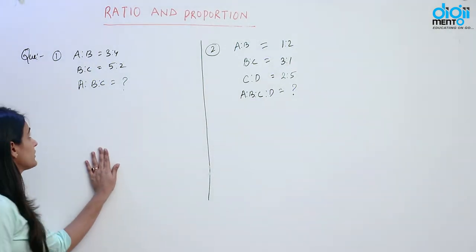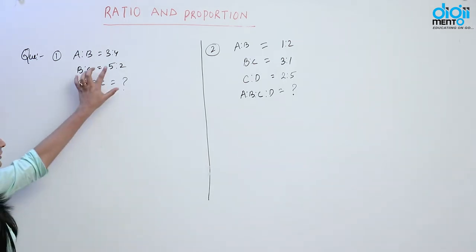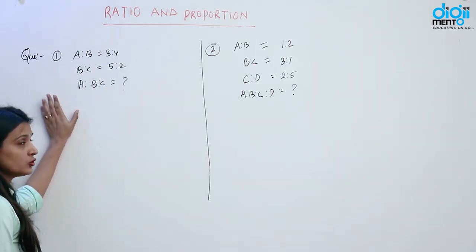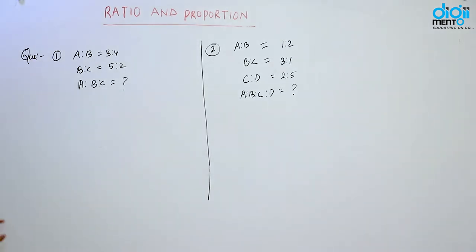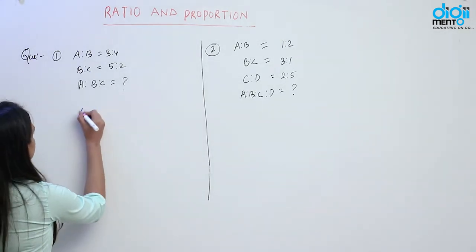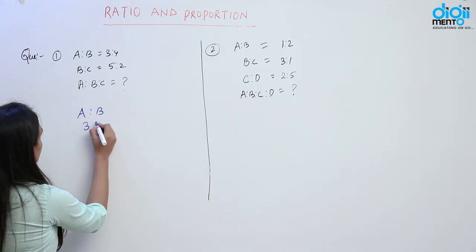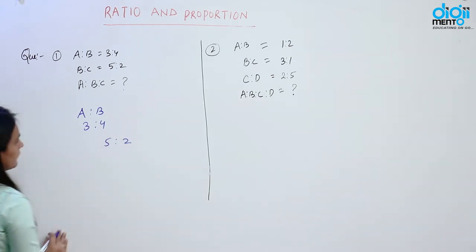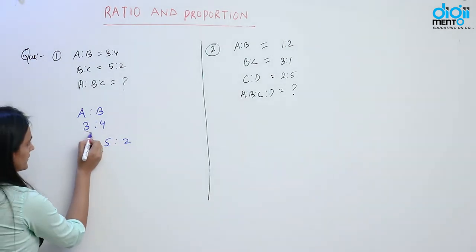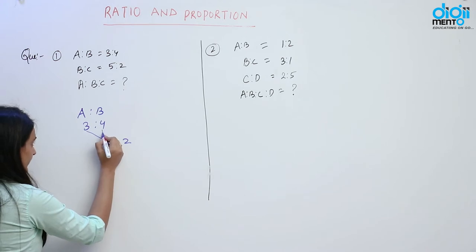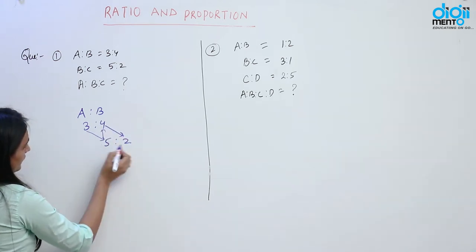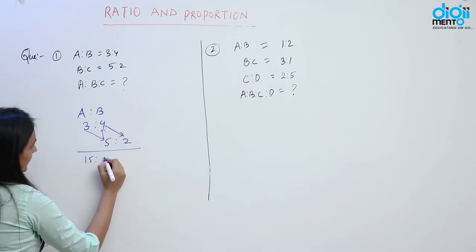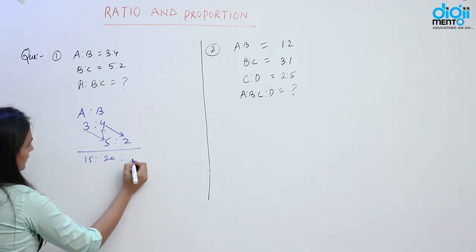Now we will start with some basic questions. We have A ratio B that is 3 ratio 4, B ratio C that is 5 ratio 2, and we have to find A ratio B ratio C. There are many ways to find this. First of all multiply 3 with 5, multiply 5 with 4, and multiply 4 with 2. When we multiply 3 with 5 we get 15, 5 with 4 we get 20, and 4 with 2 we get 8.